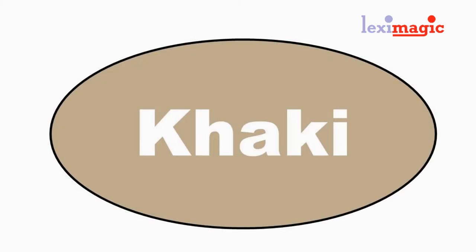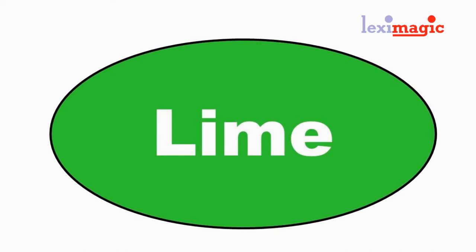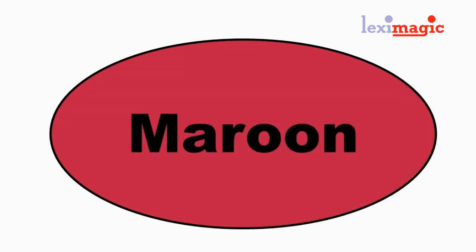Khaki: a dull yellowish brown like the color of earth. Lavender: a pale purple color. Lime: a light yellowish green. Maroon: a dark red and somewhat brownish color.